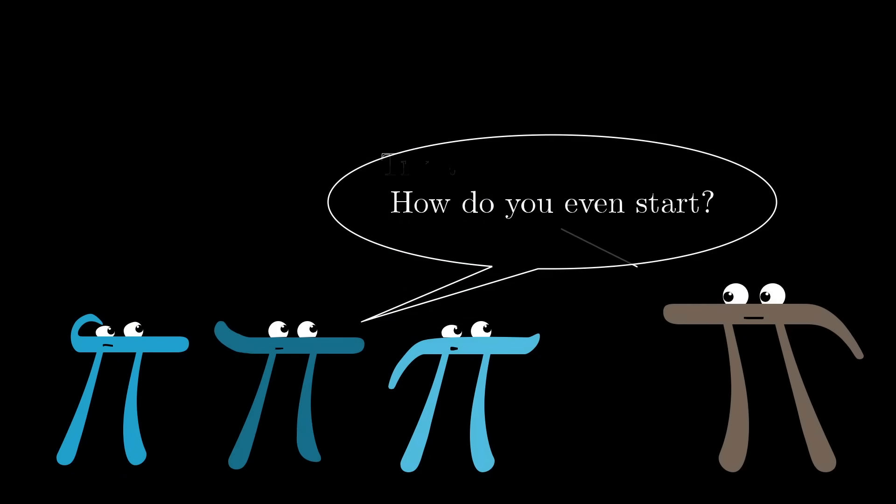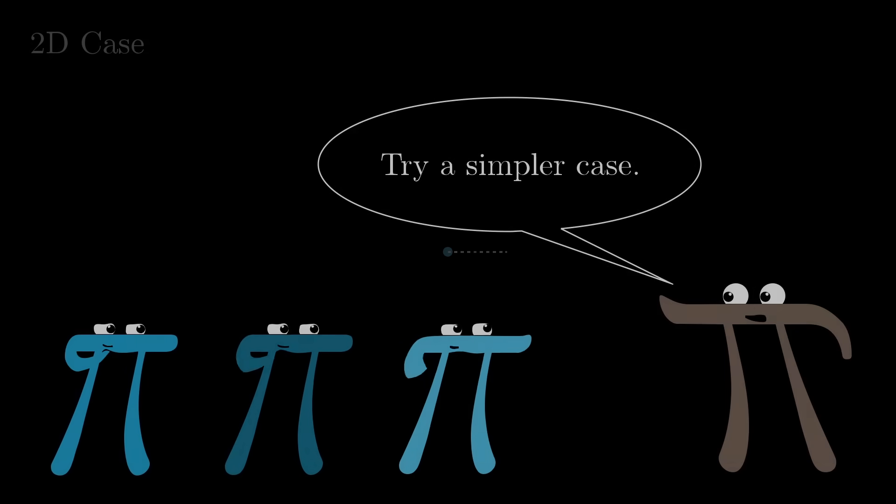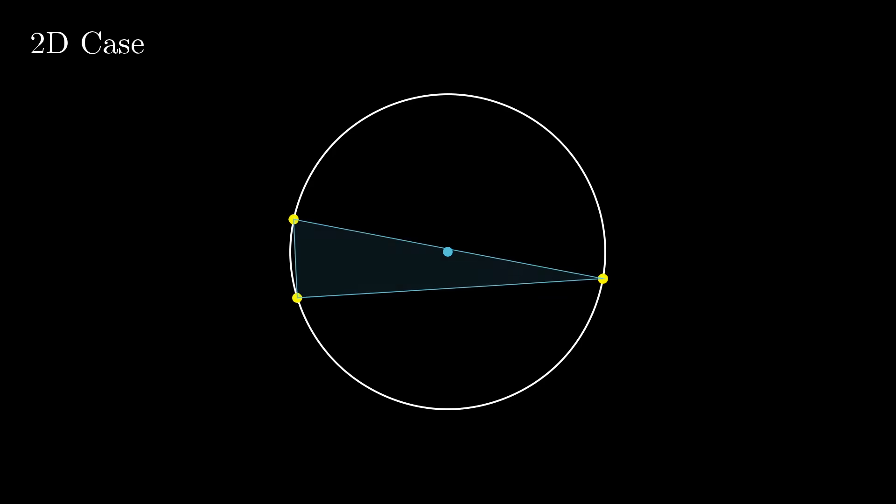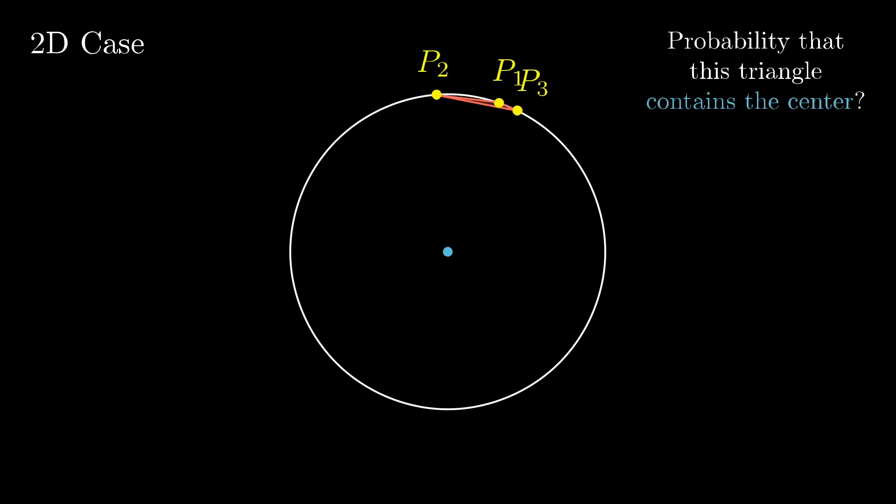Well, it's usually a good idea to think about simpler cases, so let's knock things down to two dimensions, where you'll choose three random points on a circle, and it's always helpful to name things, so let's call these guys p1, p2, and p3. The question is, what's the probability that the triangle formed by these points contains the center of the circle?